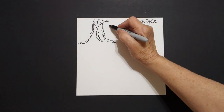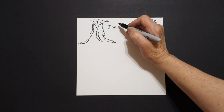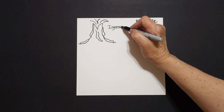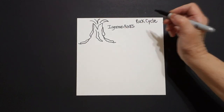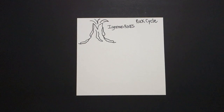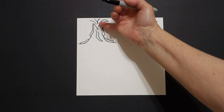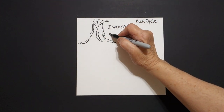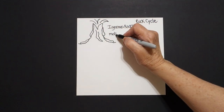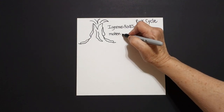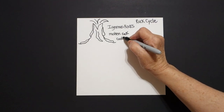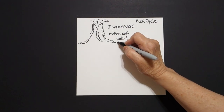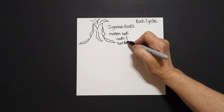This represents igneous rocks. Igneous rocks are formed when molten rock cools and hardens, like lava from a volcano. So we're going to write 'molten,' which means liquid — molten rock. What does it do? It cools and hardens. And that's how we get igneous rocks.